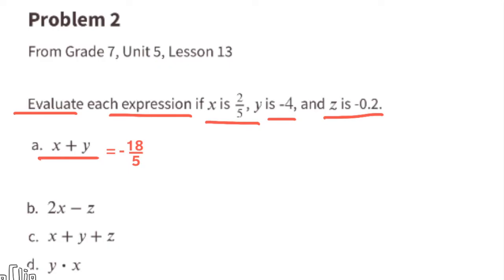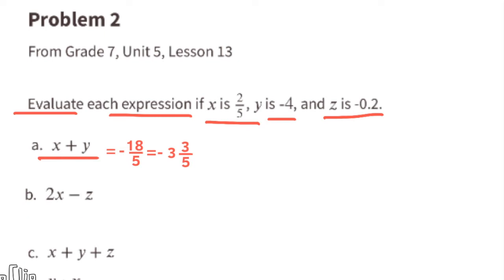So x plus y equals negative 18/5, which we can also write as the mixed number negative 3 and 3/5. Part b: 2x minus z. Substituting x with 2/5, we get 2 times 2/5. Substituting z with negative 0.2, minus negative 0.2 is the same as the opposite of negative 0.2, which is positive 0.2.